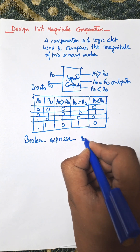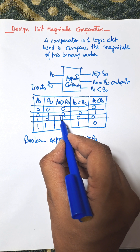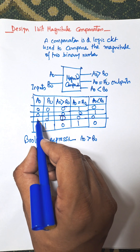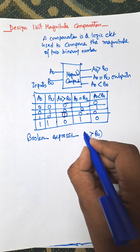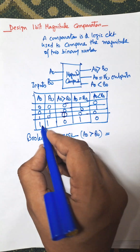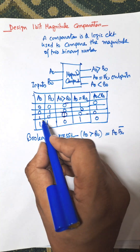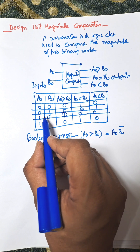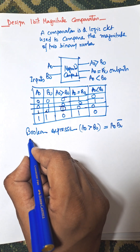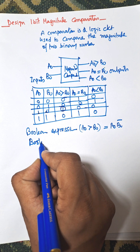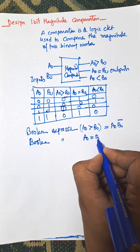Now the boolean expression for a0 greater than b0. There is only one input-output combination for this, which is 1-0. So the boolean expression for a0 greater than b0 equals a0 AND b0-bar, since that combination is 1-0.